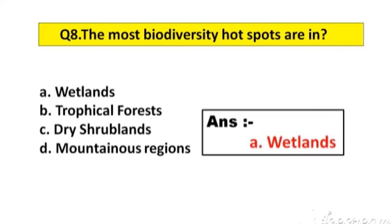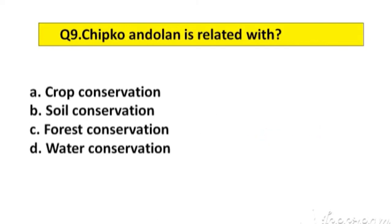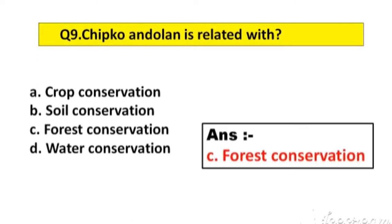Question number 9. Chipko and Appiko movement is related with. Option A: Crop conservation. B: Soil conservation. C: Forest conservation. D: Water conservation. The right answer is option C, Forest conservation.